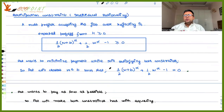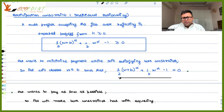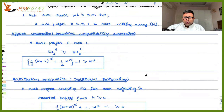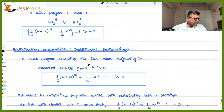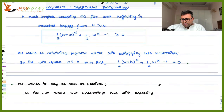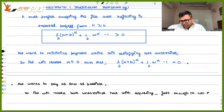Pat just wants to convince Ellen to take up this job and put in high effort. Ellen is going to take up the job when this participation condition holds. By paying this minimum amount, Pat is saying he will pay just enough — just enough to convince Ellen — and Ellen will put in the high effort.